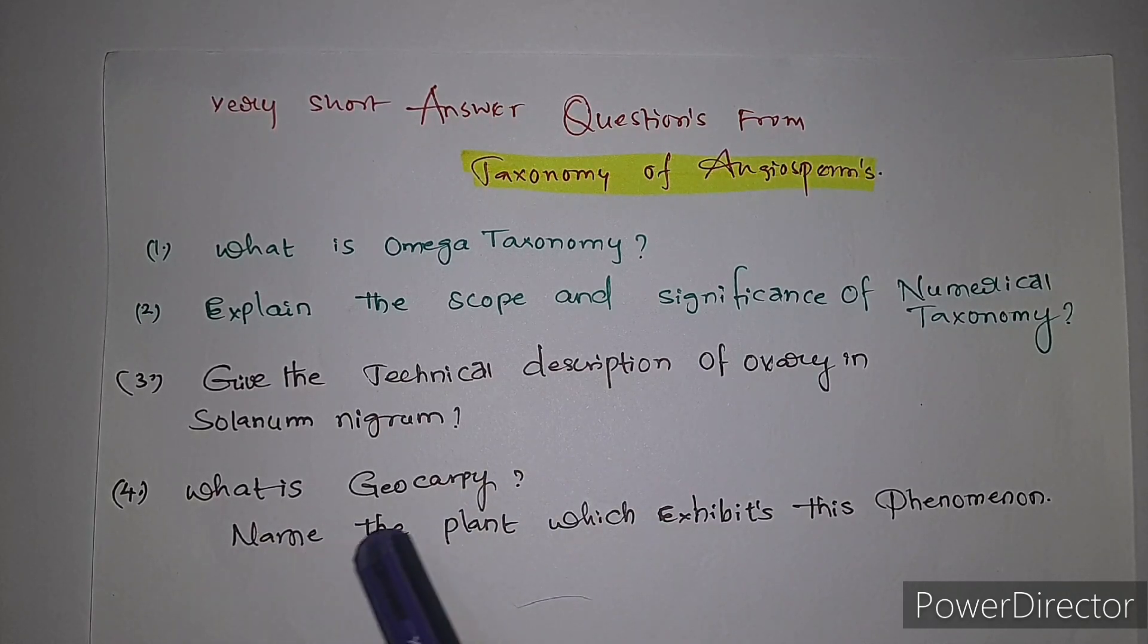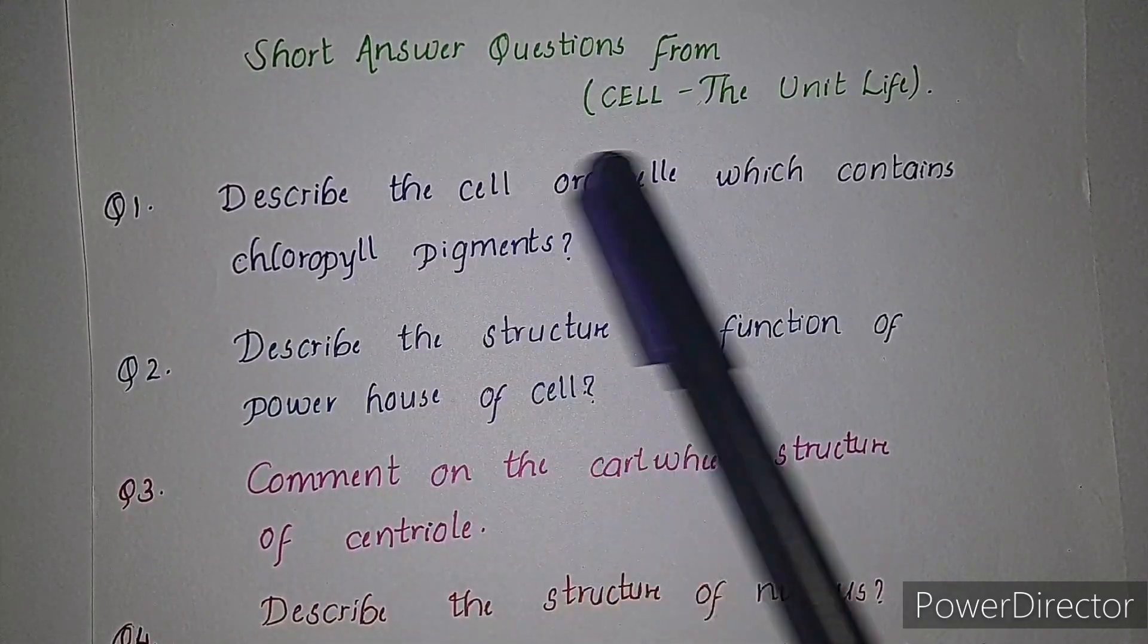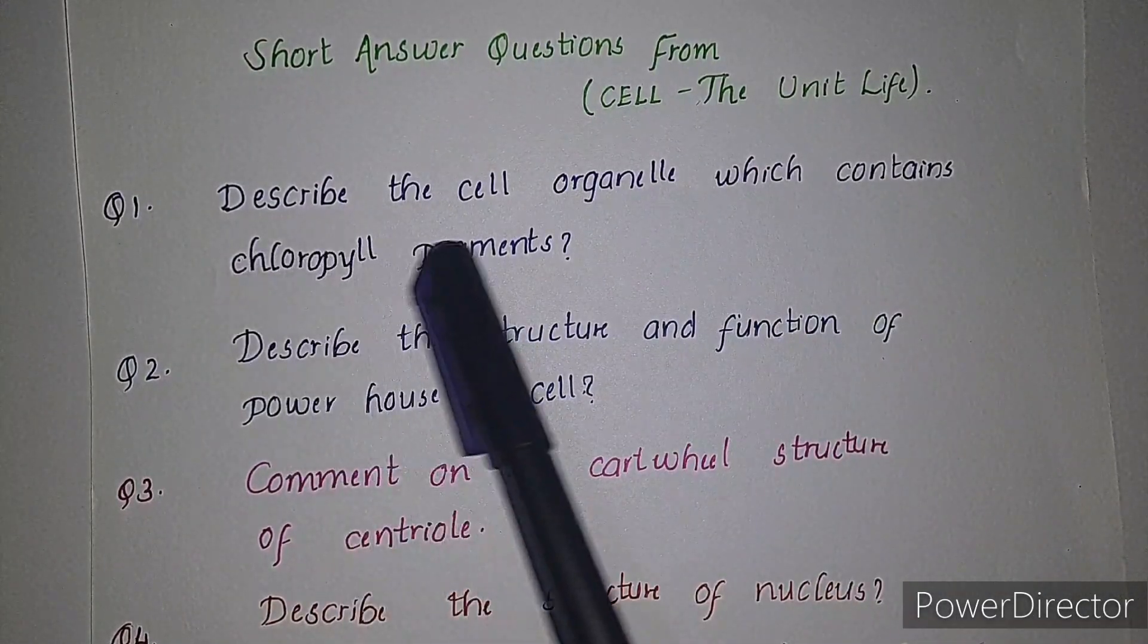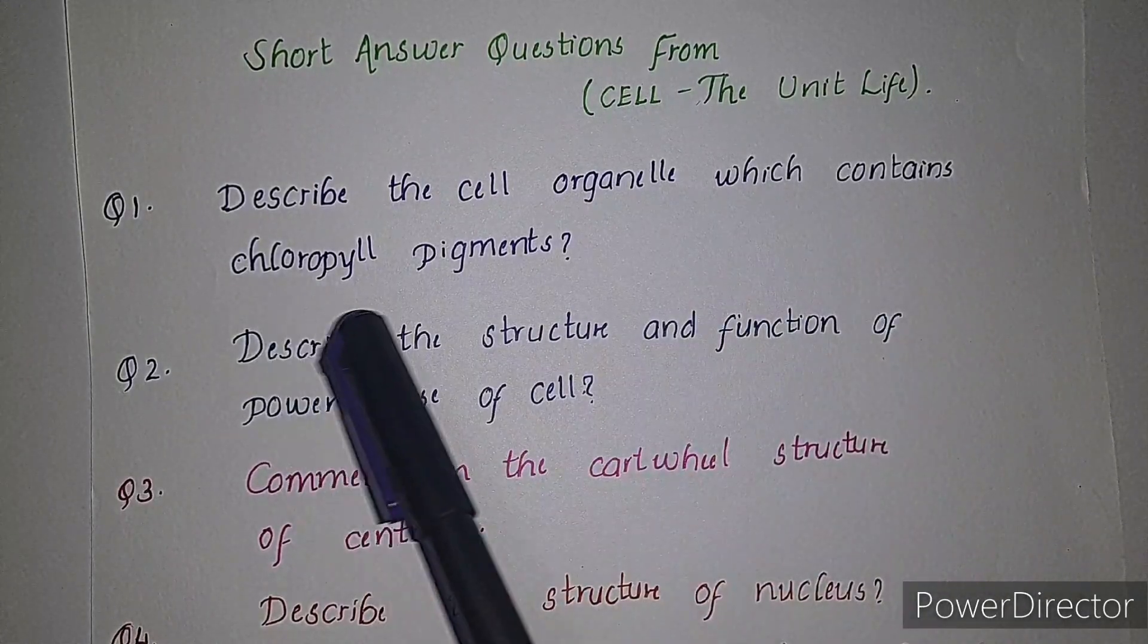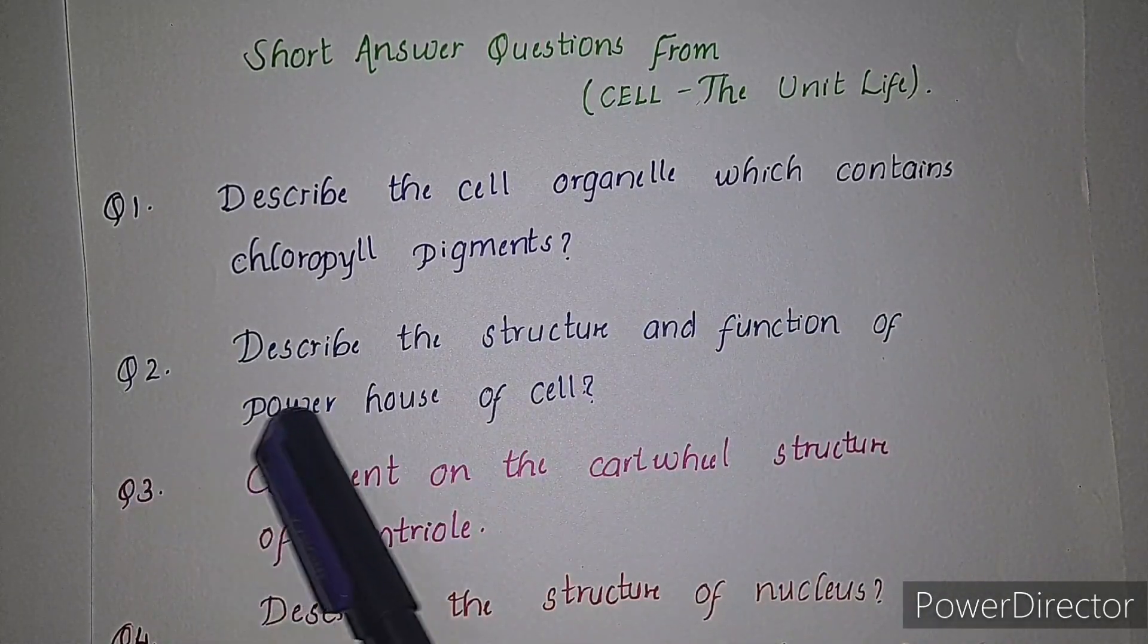Fourth question: what is geocarpy? Name the plant which exhibits this phenomenon. Short answer questions from cell, the unit of life. First question: describe the cell organelle which contains chlorophyll pigments.